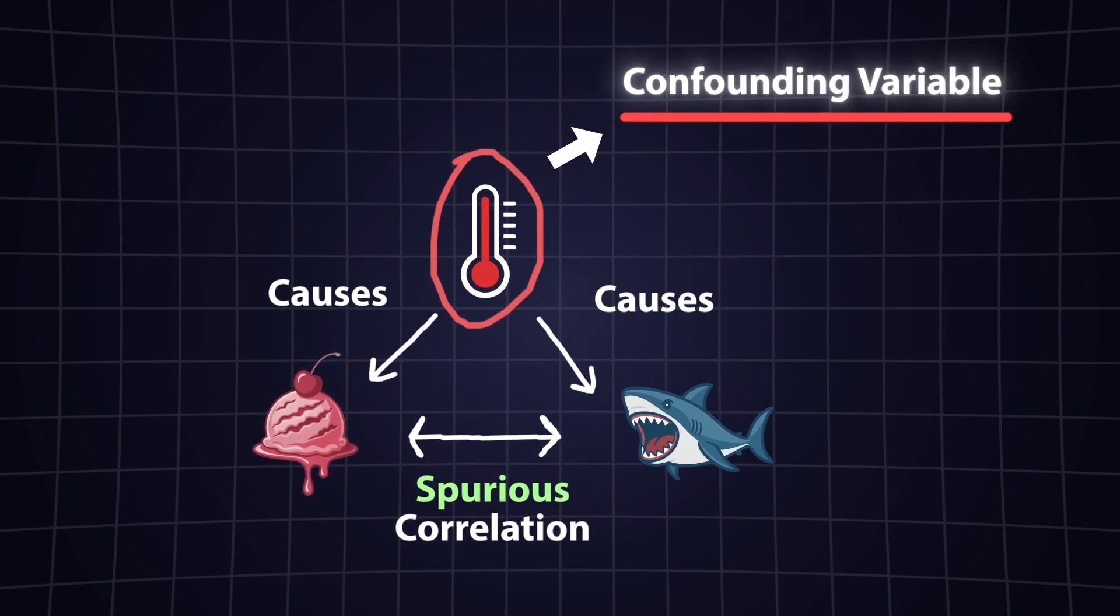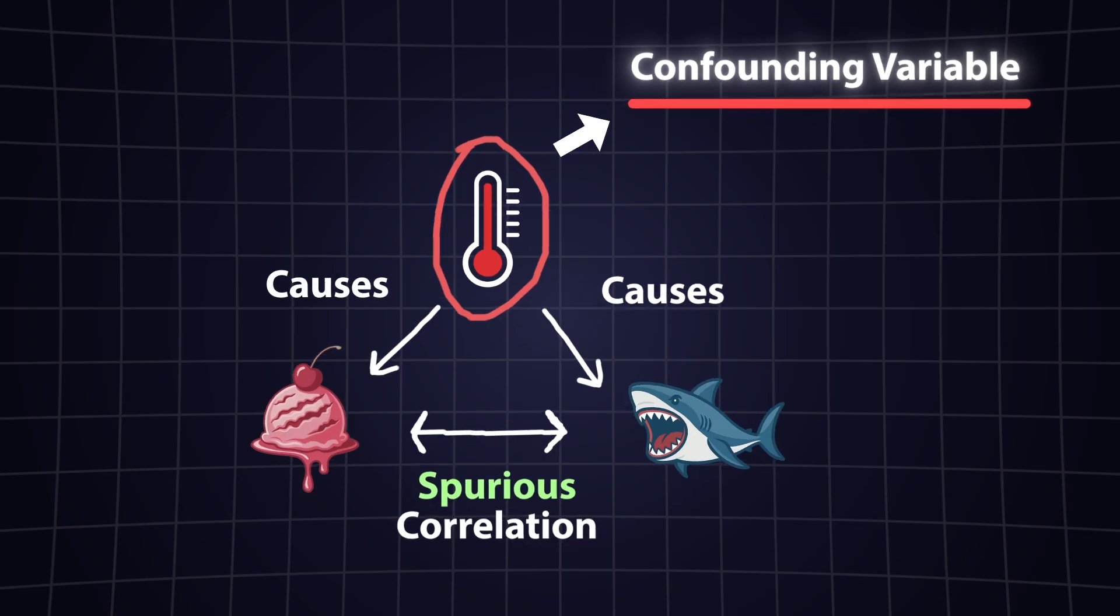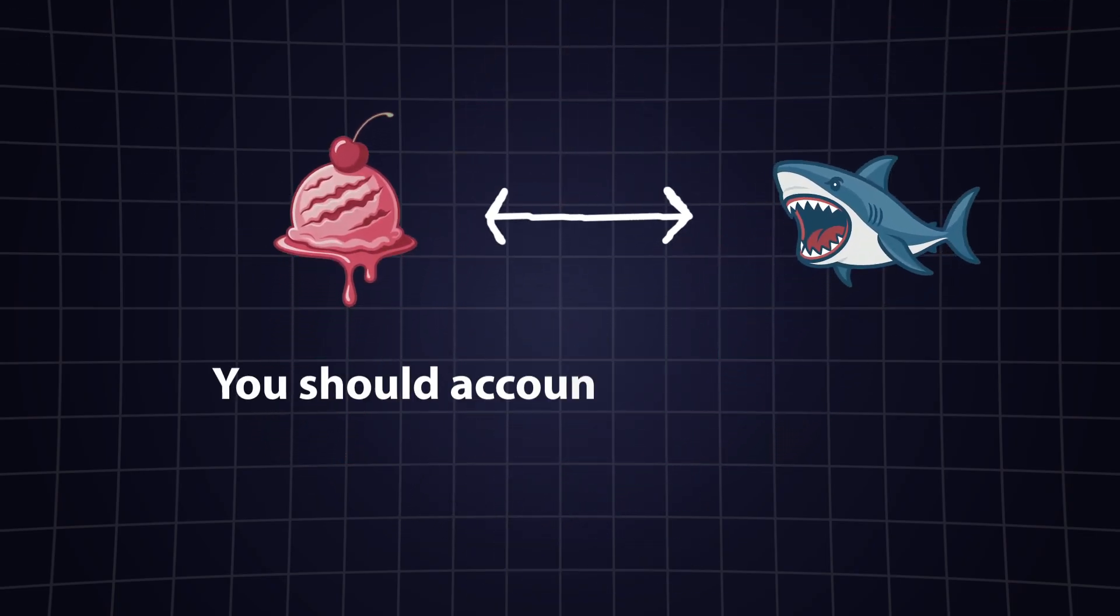This example highlights what is called a confounding variable: a hidden factor that influences both variables you're studying. Without accounting for these, we risk making false conclusions.